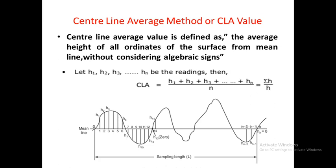Next we will see the CLA value — the centerline average value. The centerline average value is defined as the average height of all ordinates of the surface from the mean line without considering algebraic signs. Again, we take a sampling length L over which we will determine the roughness value. The mean line divides the entire surface into two equal areas — the area A1, A2, A3 above equals the area below.